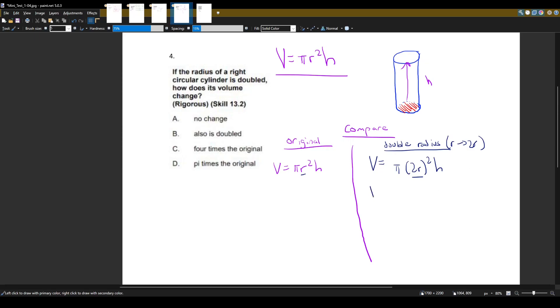Now let's simplify this a little bit. Volume is equal to pi times, what is 2r squared? 2 squared is 2 times 2, which is 4, and r squared is r times r, which is r squared h.